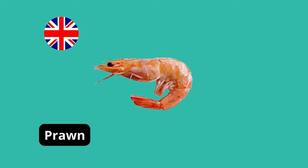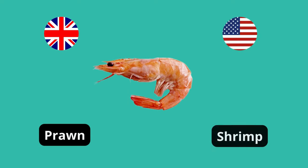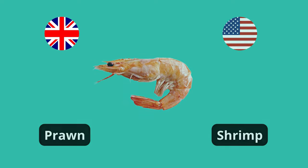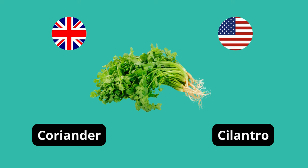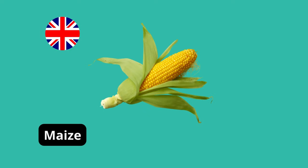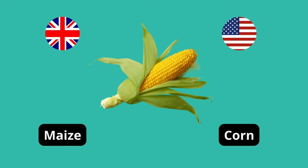Prawn (British English) — Shrimp (American English). Coriander (British English) — Cilantro (American English). Maize (British English) — Corn (American English).